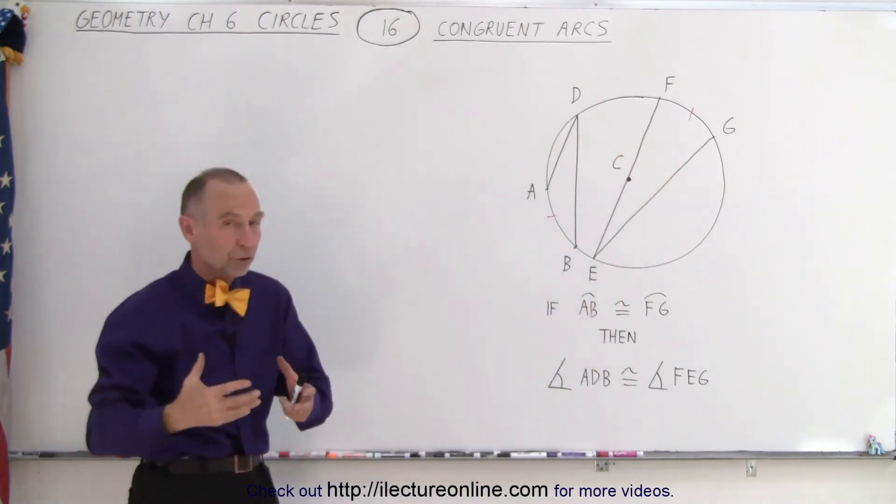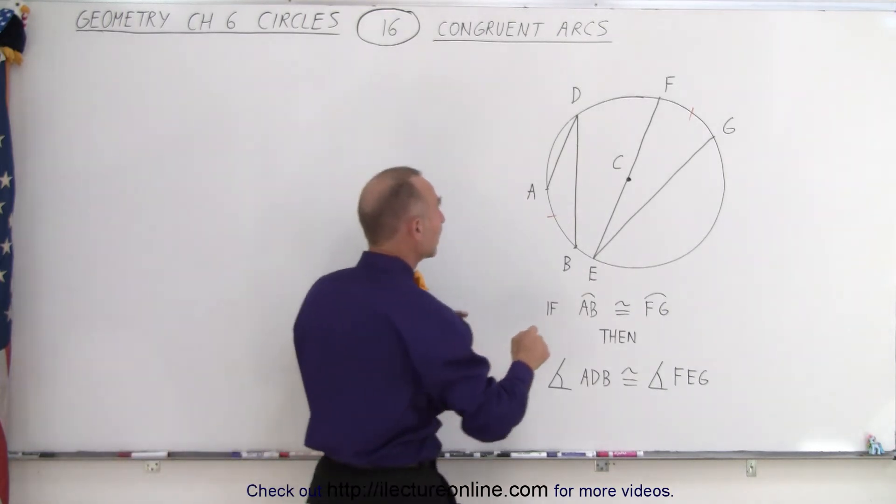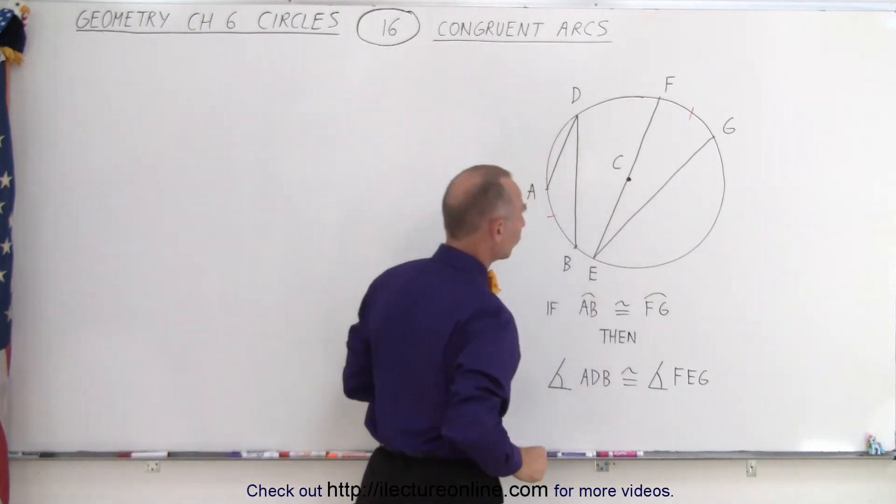And let's say that those two arcs are congruent, in other words they have the same measure. If that is the case, that means that the two inscribed angles must be congruent as well.